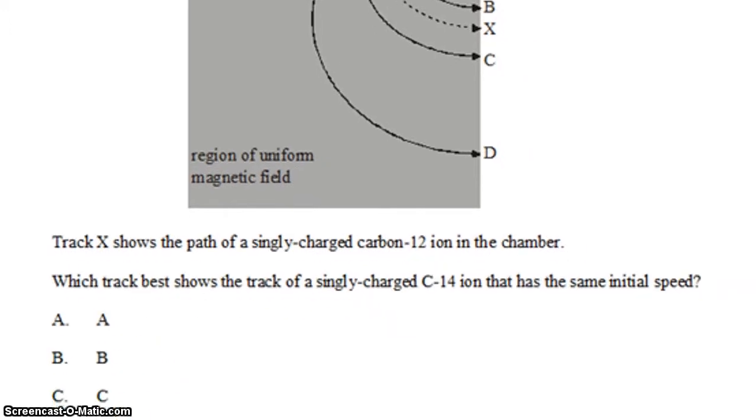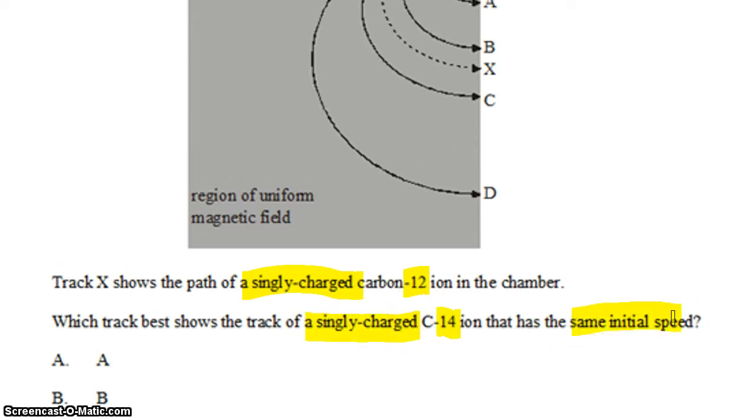We're told that track X shows the path of a singly charged carbon-12 ion. Which track would show the track of a singly charged carbon-14 ion that has the same initial speed?